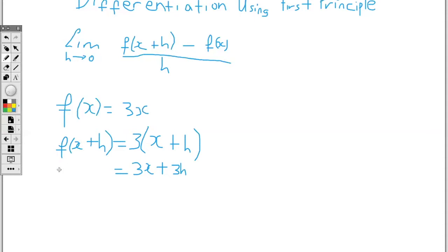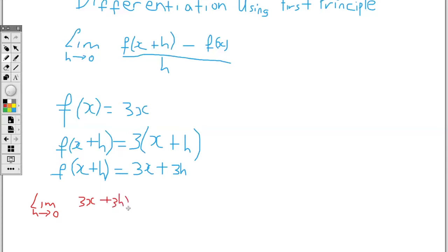Now once I have f of x plus h, I'll be replacing it into the formula. So we have the limit as h tends to 0. Our f of x plus h is 3x plus 3h, while our f of x is 3x. Now here the 3x will be cancelling the 3x — we have 3x minus 3x, so these two cancel. So we are left with 3h over h.